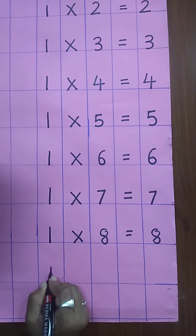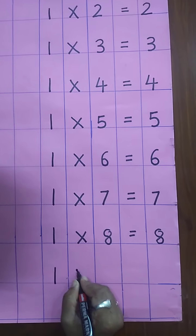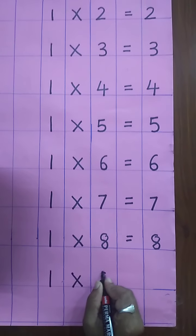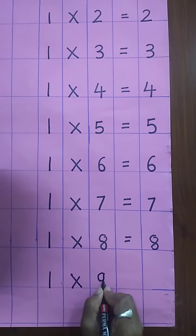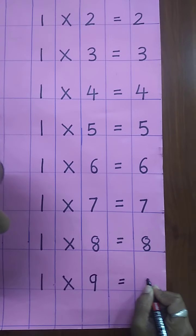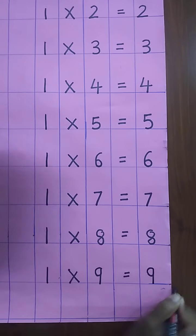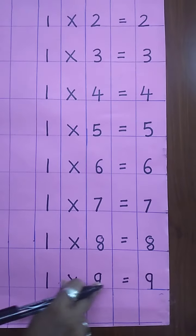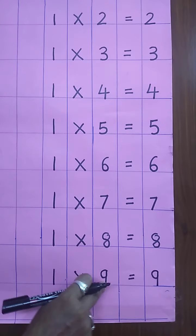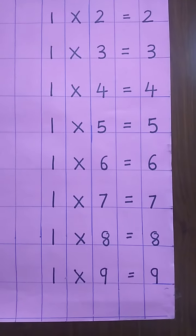Again, write here one. Multiplying sign. Write here nine. Equal sign. And again, nine. One nines are nine. One nines are nine.